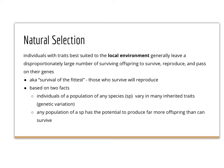You've probably already heard the term natural selection. I did put it in the breeding bunnies activity. If you just break down the words, it is nature selecting for certain traits that are beneficial to a population. The definition of natural selection is: individuals with traits best suited to the local environment generally have a disproportionately large number of surviving offspring — they survive, reproduce, and pass on their genes.